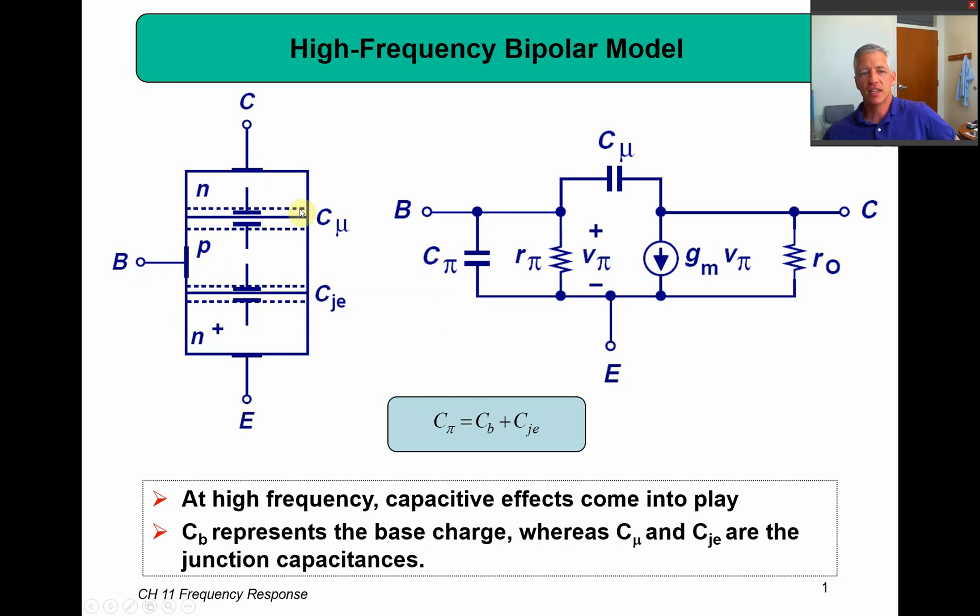So if we take this and break it up into our small signal model, here's our R_pi, here's our dependent current source, our R_O, we have a capacitor right here between my collector and my base. So this is that junction capacitor, which the book calls C_mu.